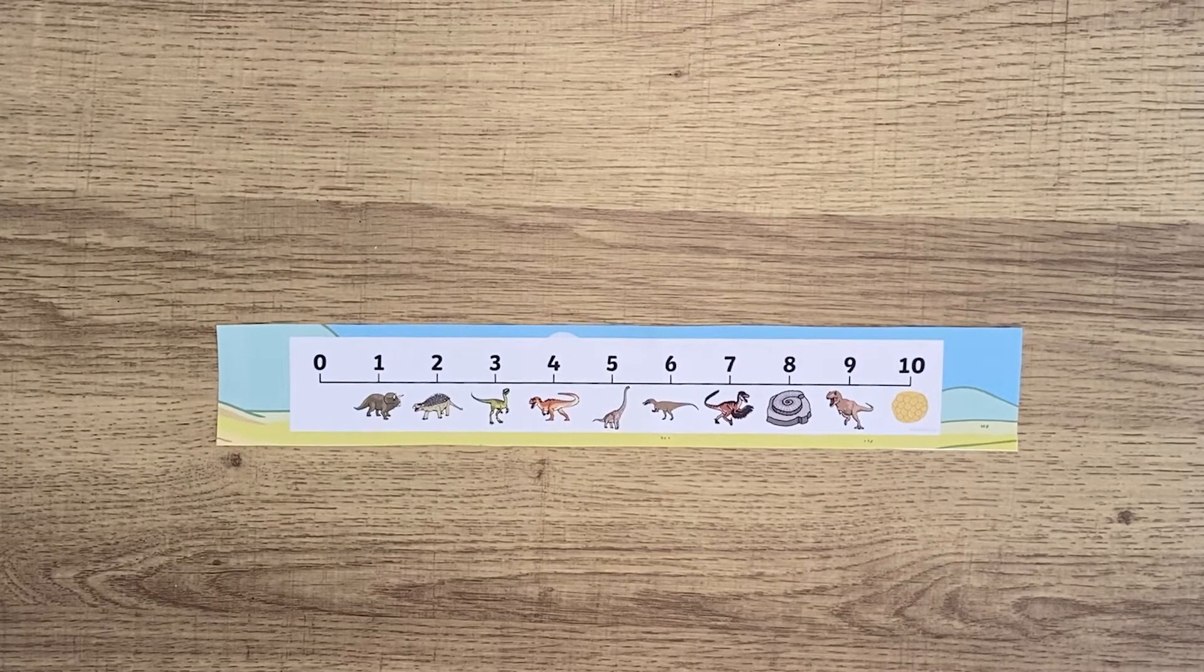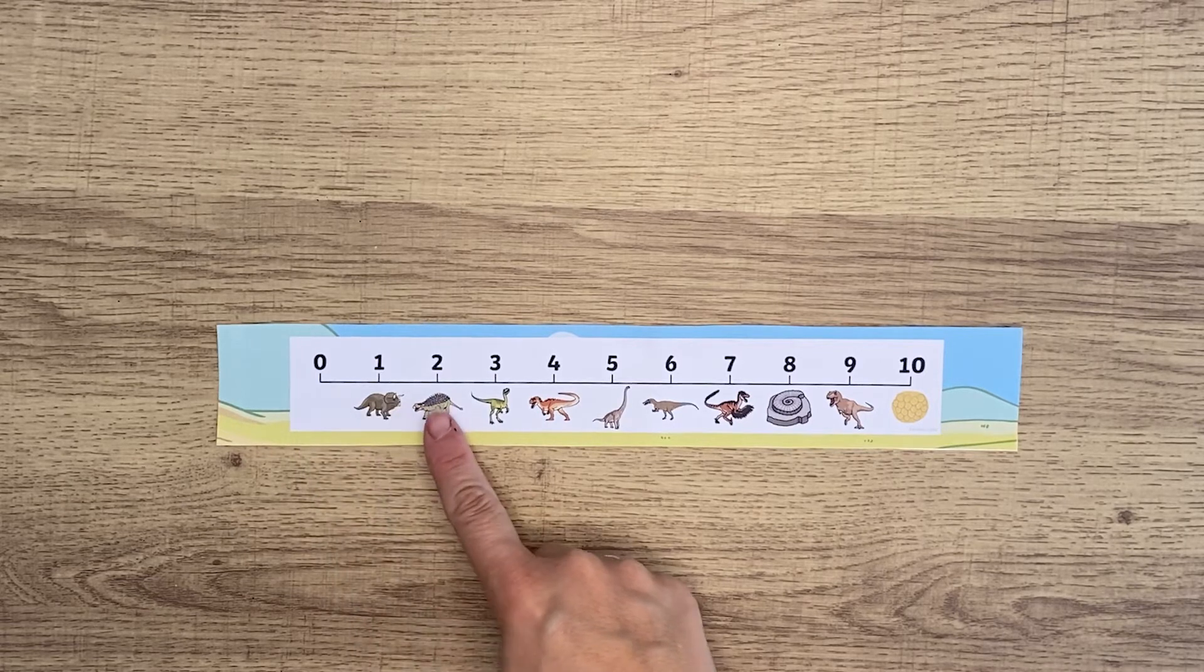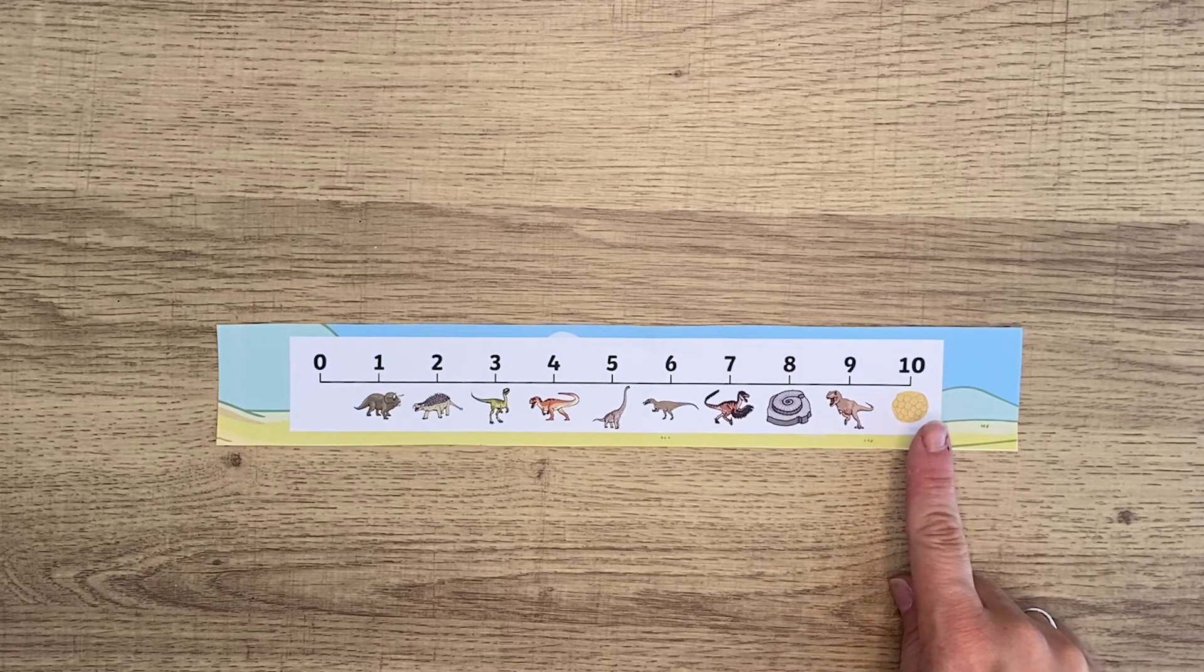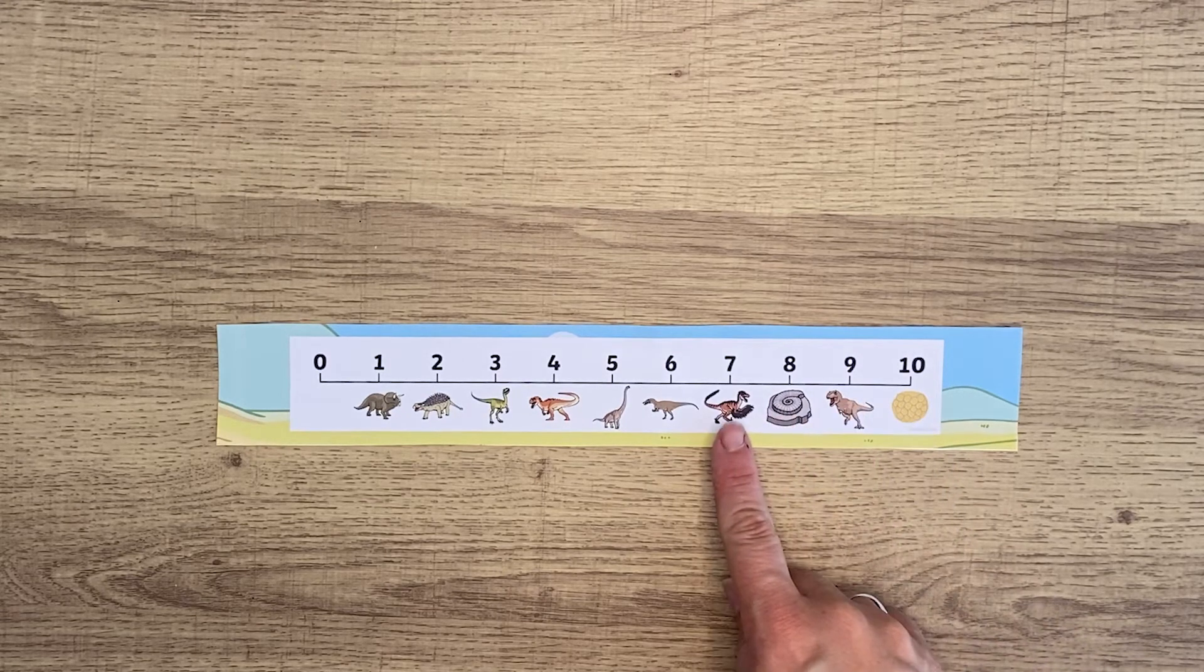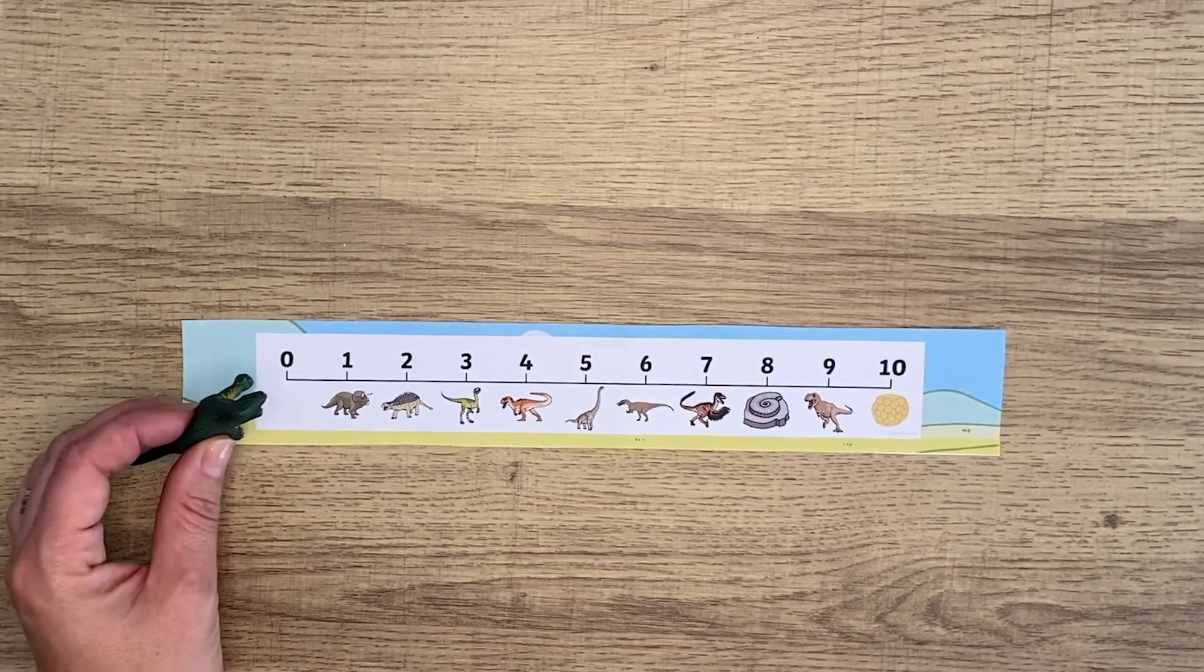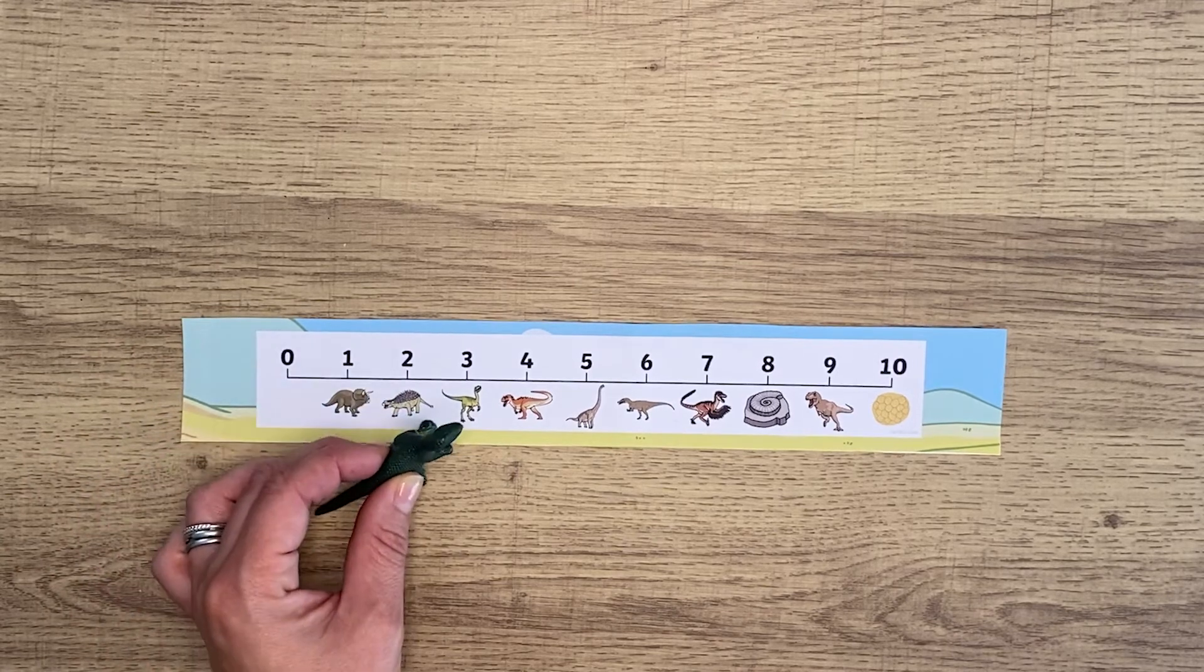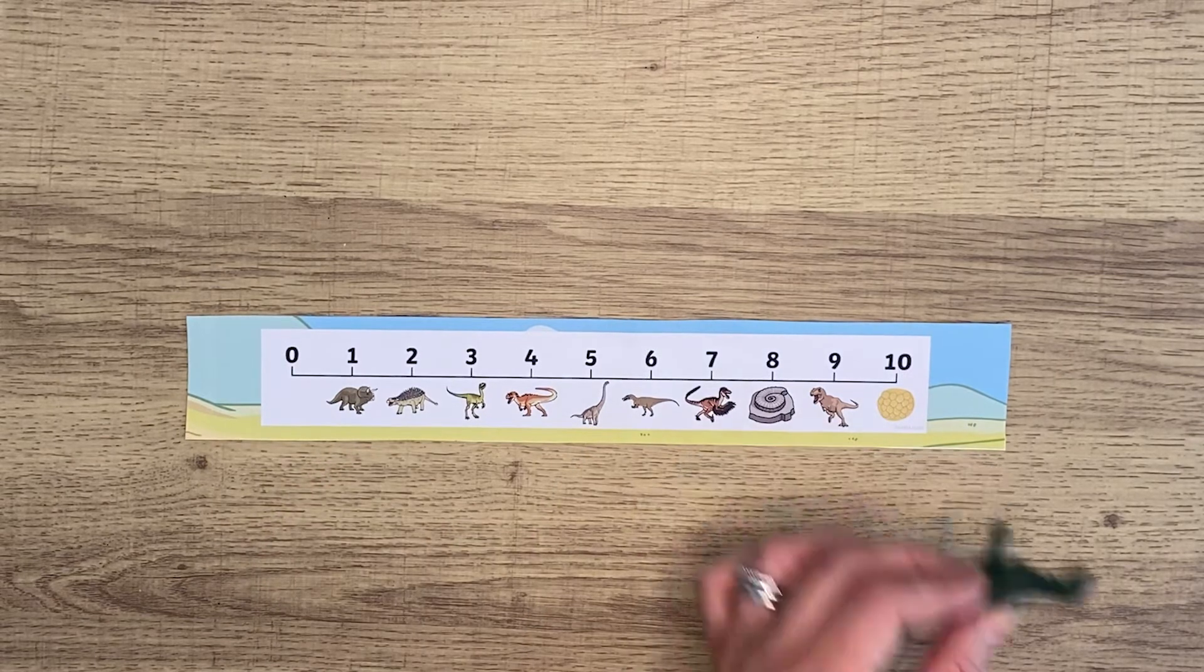You could use this number line to simply count, pointing to the numbers: zero, one, two, three. You could also start at ten and go backwards: ten, nine, eight, seven. You could use a little toy to jump from number to number - zero, one, two, three, four - and backwards starting at ten.